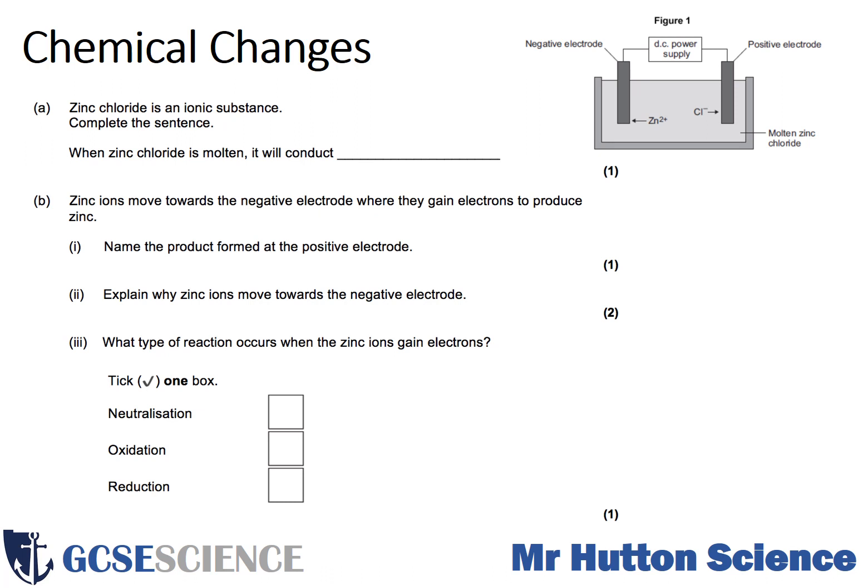When zinc chloride is molten, it will conduct something. The two things you will have talked about conduction with are electricity and heat, so you need to consider which one is most appropriate. Zinc ions move towards the negative electrode where they gain electrons to produce zinc. You need to name the product formed at the positive electrode — so consider which ions might go to the positive electrode and what might be formed there.